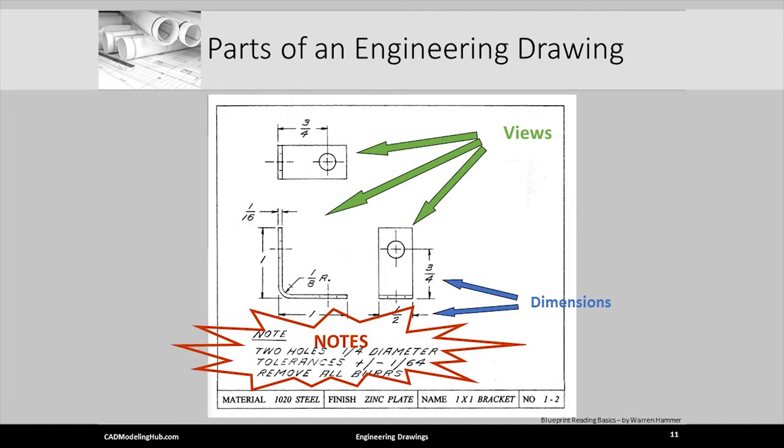They give the diameter of the two holes. The next note explains how accurate each dimension needs to be manufactured. And the final note is for safety. It instructs the manufacturer to file off any burrs or sharp edges.